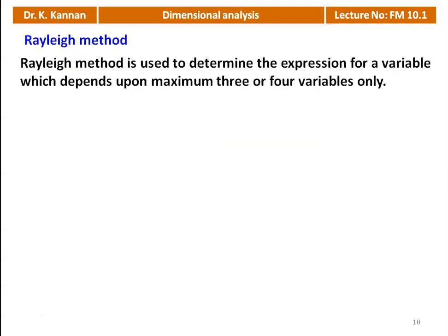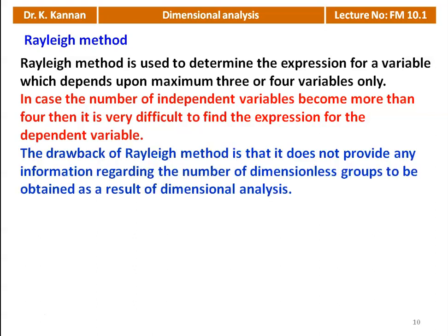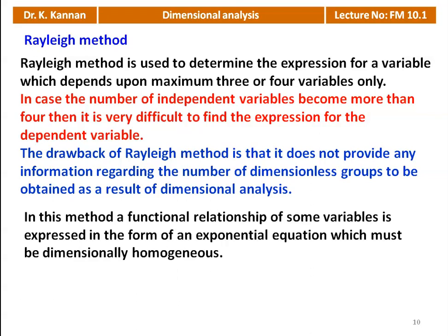Rayleigh's method is used to determine the expression for a variable which depends on a maximum of 3 or 4 variables only. When you have a maximum of 3 or 4 variables, then we can use the Rayleigh method conveniently. In case the number of independent variables becomes more than 4, it is very difficult to find the expression for the dependent variable, and you will automatically go to the Buckingham Pi method. The drawback of Rayleigh's method is that it does not provide any information regarding the number of dimensionless groups to be obtained.